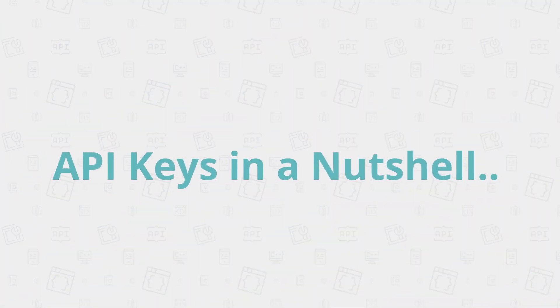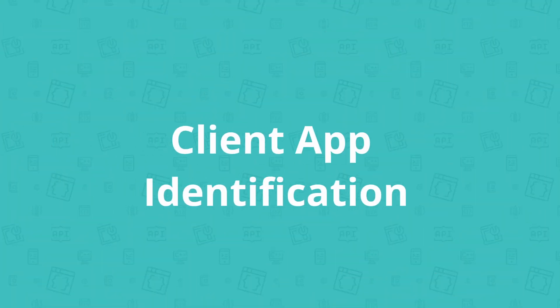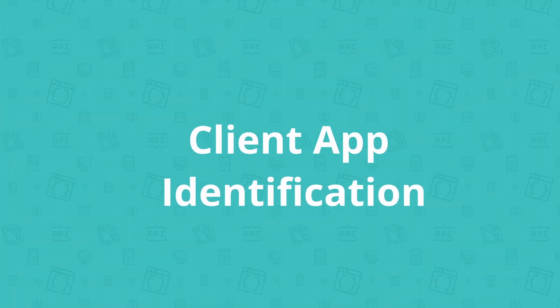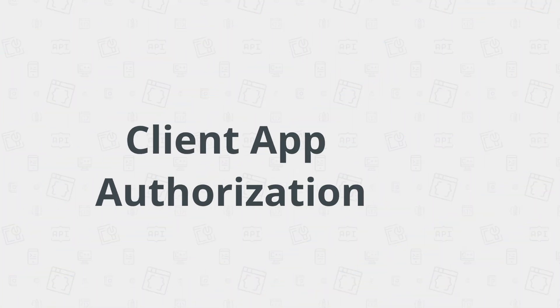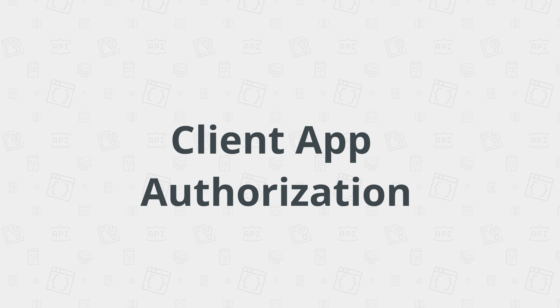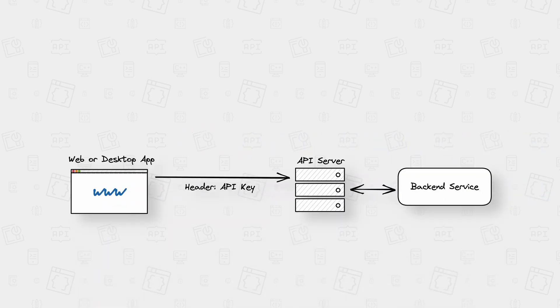So what are API keys doing in a nutshell? In technical terms, API keys provide two things. First, client app identification, because they identify the applications making API calls to the server. And second, client app authorization, because they check whether the calling applications actually have been granted access to the API server.